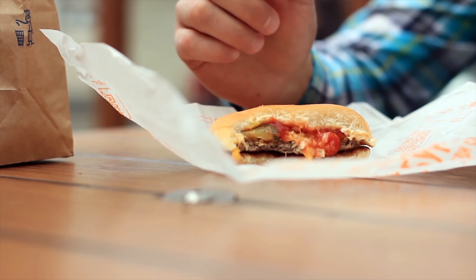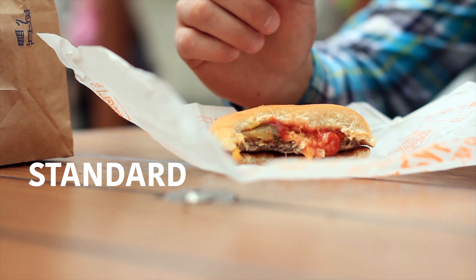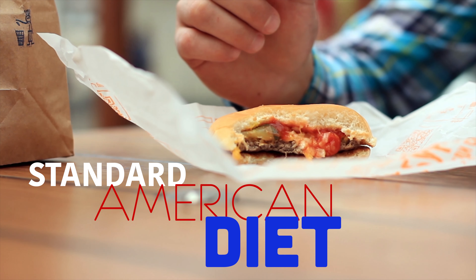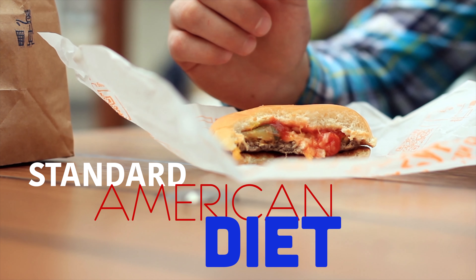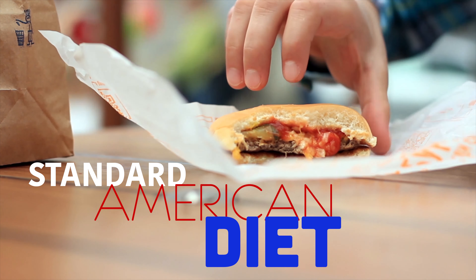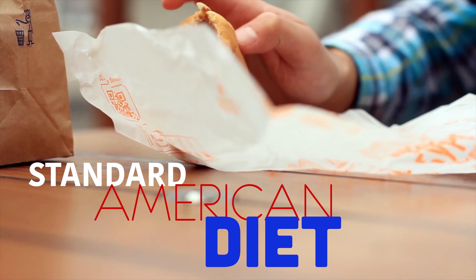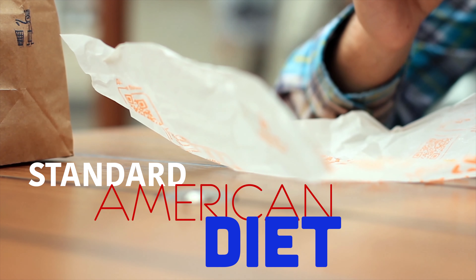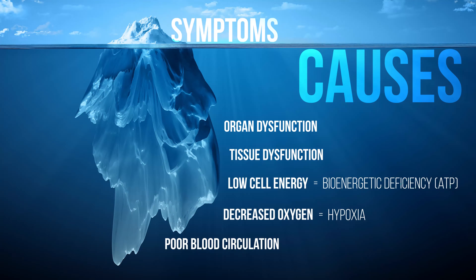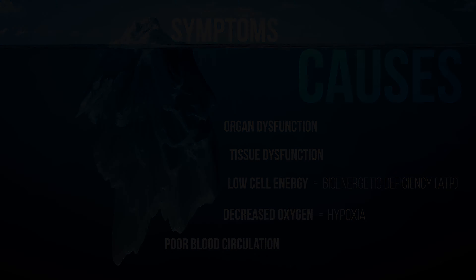This then affects us at a cellular level, at a tissue level, and then at an organ level, and ultimately back to symptomatic expression. What's the cause of most chronic disease? In the context of this slide, that means lack of regular exercise and poor breathing habits.